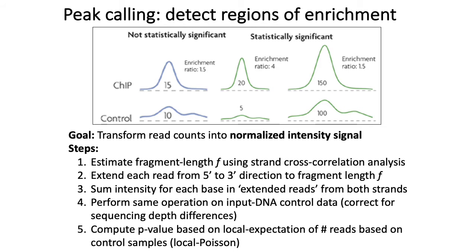Generally speaking, the more reads that map to both your ChIP-seq assay and your control, the more statistical significance you can get. If you see a 50% enrichment with lots of reads, your certainty about that 1.5 estimate is much higher than if you only have 15 reads in your assay versus 10 in your control — where you might just have gotten an extra five reads by chance. Your P-value essentially reflects that, and it depends on the number of reads mapping to those locations in both your assay and control.